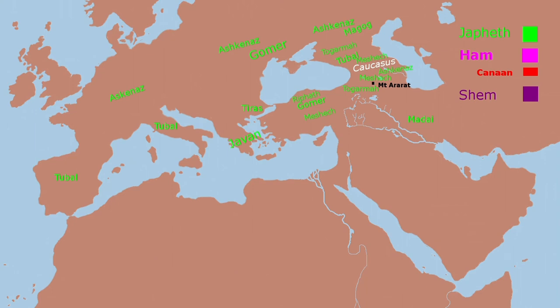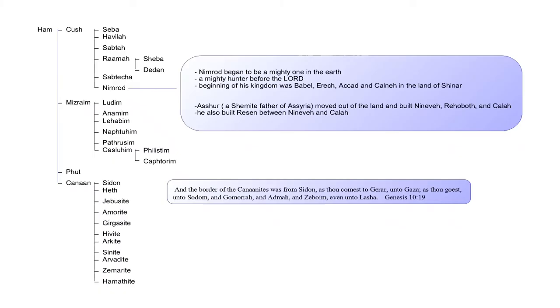The sons of Japheth are closely associated with the Caucasus Mountains — this is where we get the word Caucasian. They seem to have migrated west and east from the Caucasus Mountains to populate Europe, Russia, and Iran. Scientists call these the Indo-European tribes.